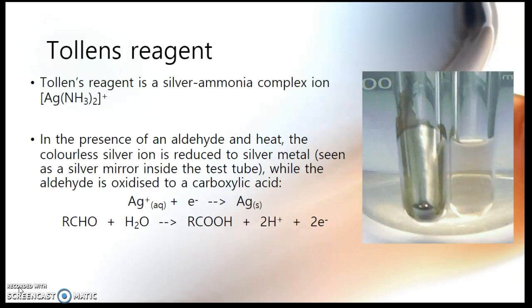Now, if you add Tollens reagent to an aldehyde and you heat it up, the aldehyde is oxidised to the carboxylic acid, while the Tollens reagent, the silver ion, is actually reduced back to silver metal (Ag⁰), and you get the formation of a silver mirror on the inside of your test tube.